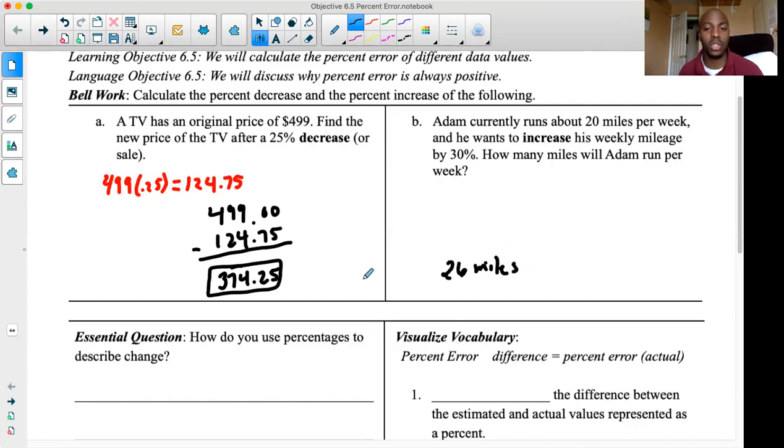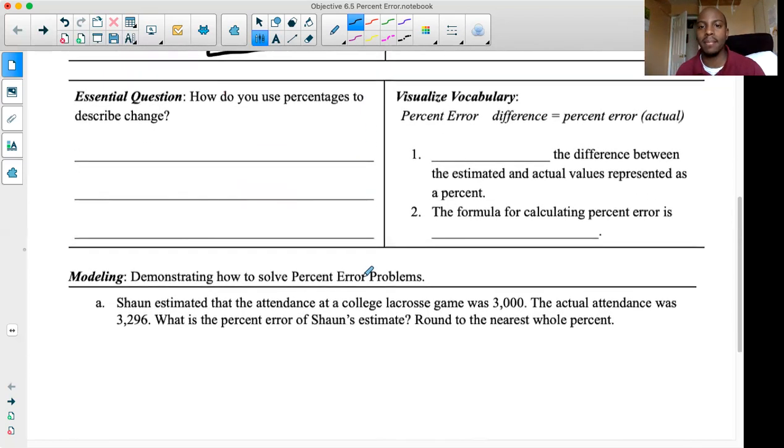All right. Let's dive into the essential question, the visualized vocabulary, and of course, the modeling. Now, how do you use percentages to describe change? We're going to be talking about describing change because in this case we're talking about percent error. There are times where you may estimate something, like how many people might be somewhere, but the actual might be different. And we could talk about the percent change and say, you were off by this much percent, or you were close by this much percent. That's called percent error. It's the difference between the estimate and the actual values represented as a percent.